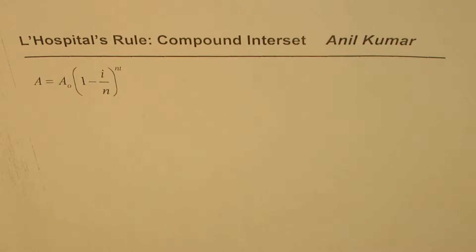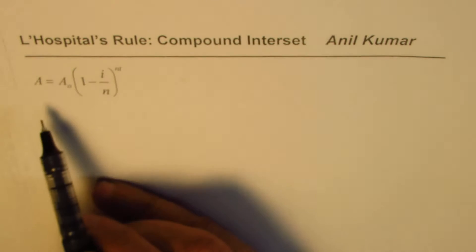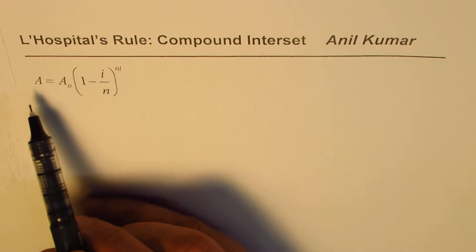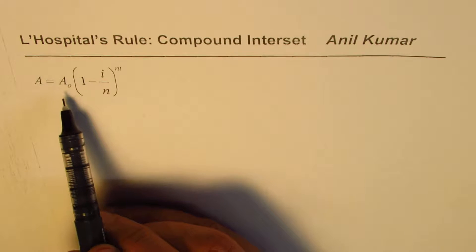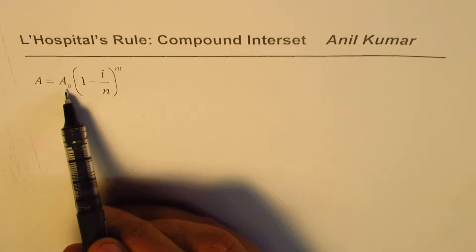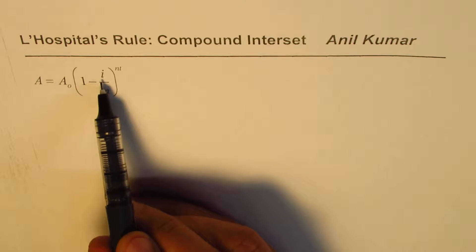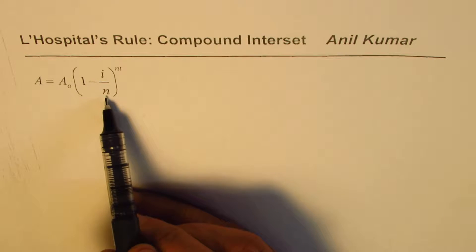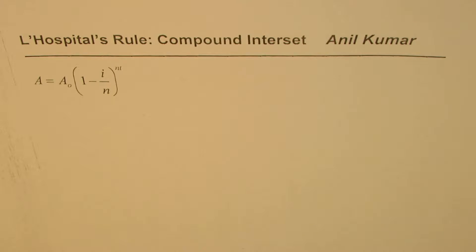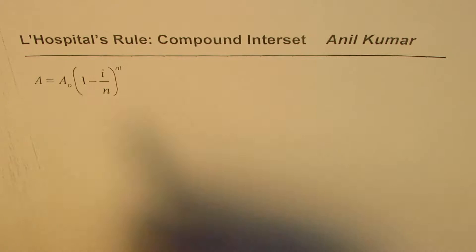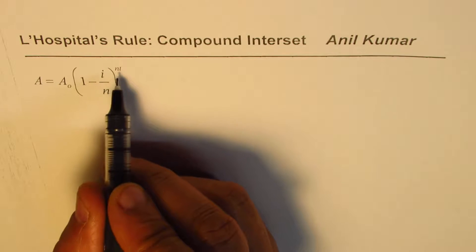I'm Anil Kumar and in this video we'll investigate one of the most important applications of L'Hôpital's rule. We have a formula which gives the final amount A, where A₀ is the invested principal, invested over a period of T years at interest rate I, and N is the number of times the amount is compounded per year.